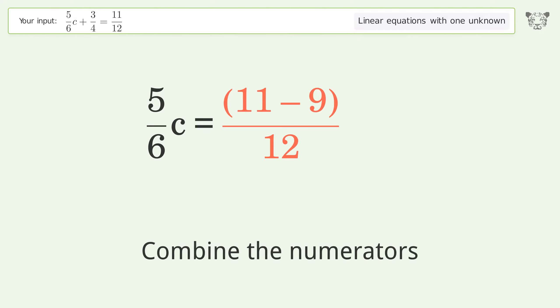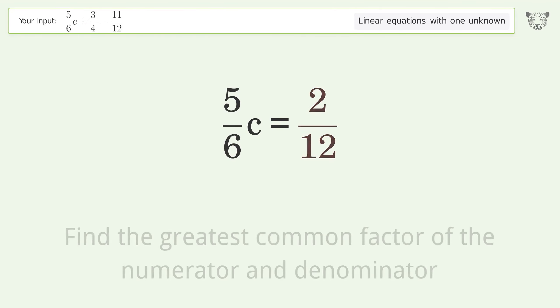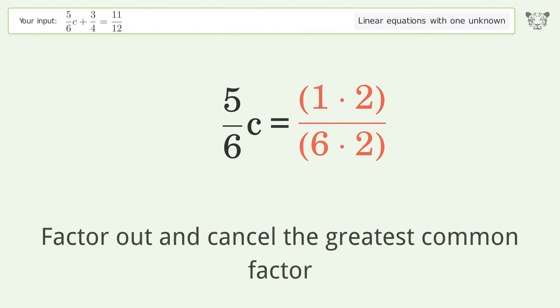Combine the numerators. Find the greatest common factor of the numerator and denominator. Factor out and cancel the greatest common factor.